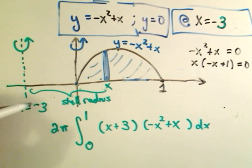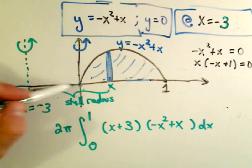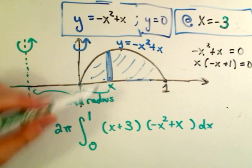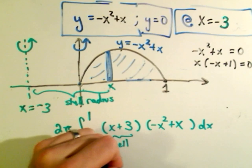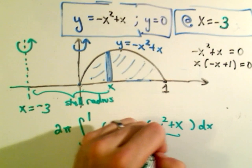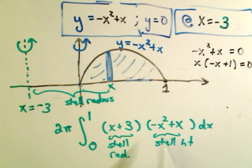And this other part will be the shell height. If you wanted to integrate this, you would have to just foil everything out, and then use the basic power rule again.